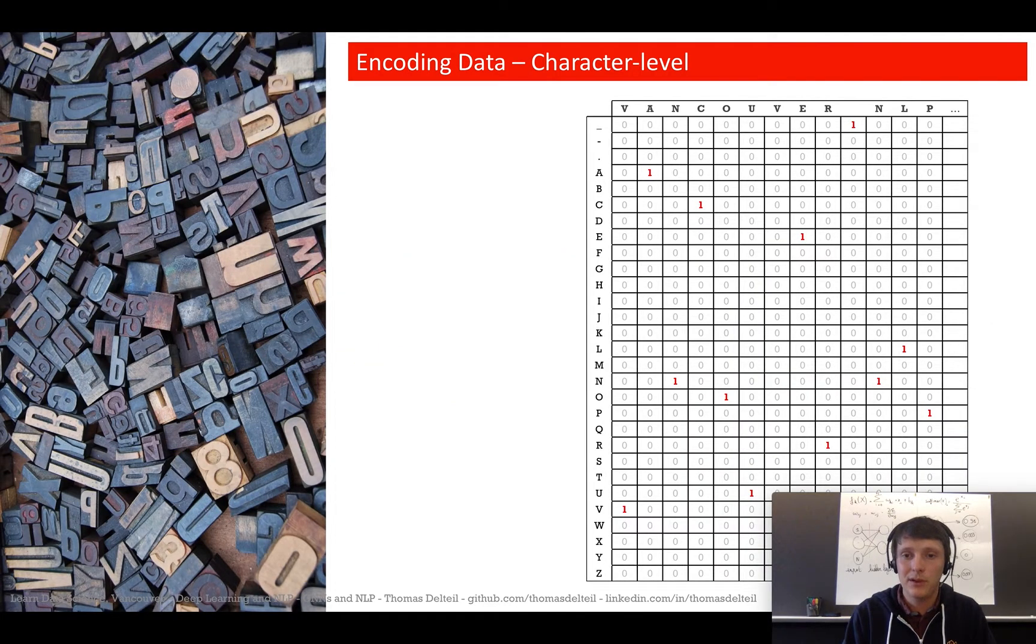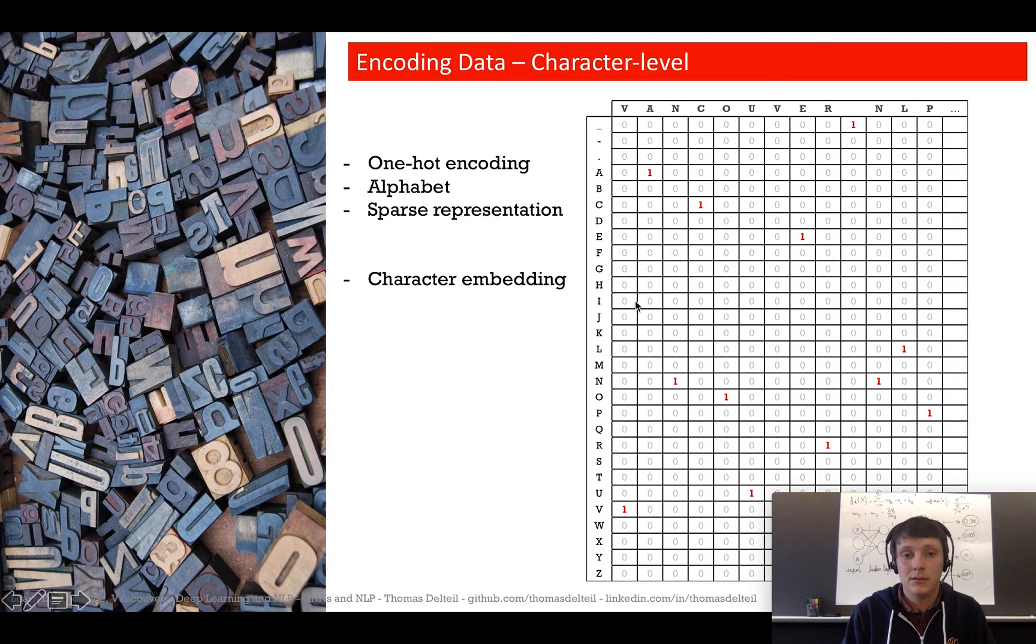So forget about words and you can use one hot encoding of characters. So what does one hot encoding mean? You have a letter, you have an alphabet, a dictionary of characters that are acceptable. Each letter is represented, or each character actually, as a vector with lots of zeros and a one with a corresponding value. So here you have Vancouver NLP represented in a one hot encoded form on this alphabet.